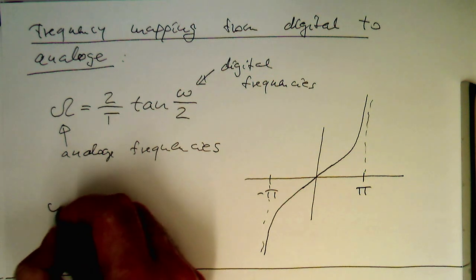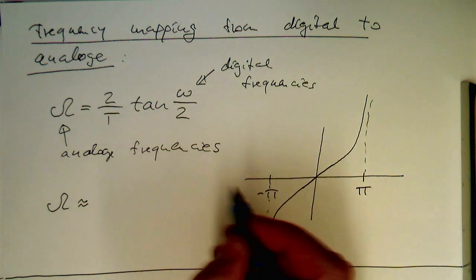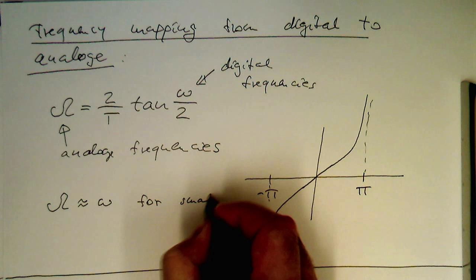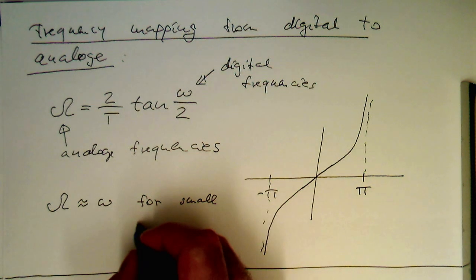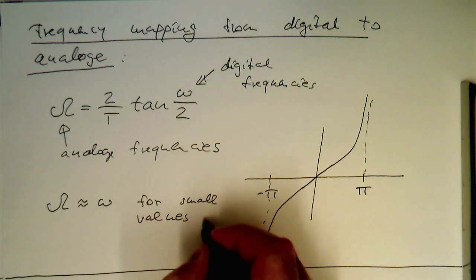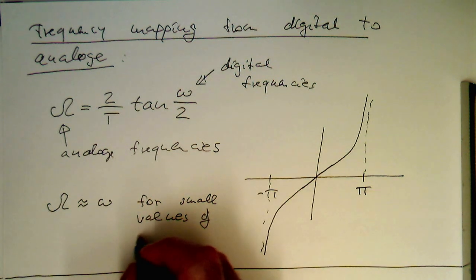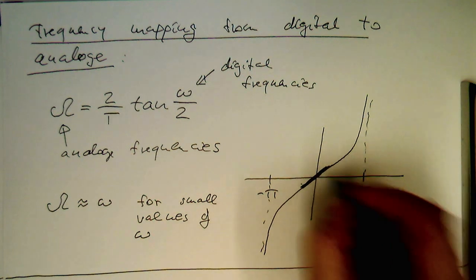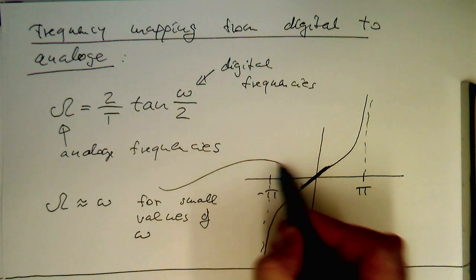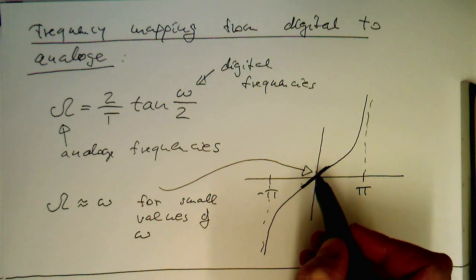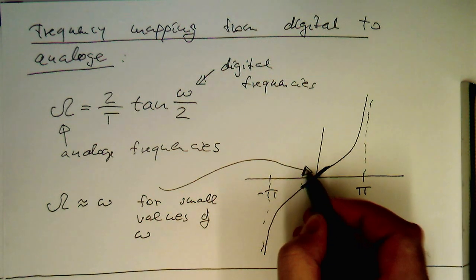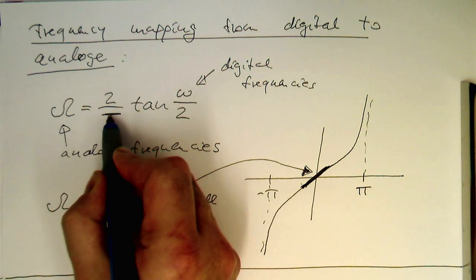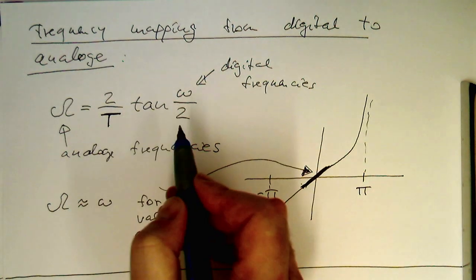So this means that this formula is roughly proportional to omega for small values of omega. So essentially here in this region, this is a linear region here. This means that our digital frequencies, if they are low, that the mapping is one to one. So the t factor here brings us back to analog frequencies for small values.